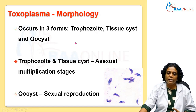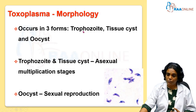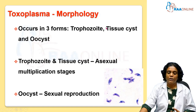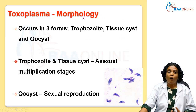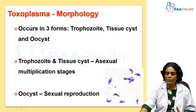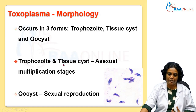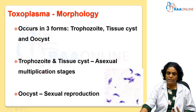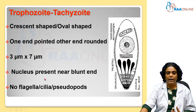In humans, you will be able to demonstrate the trophozoites or tachyzoites and the tissue cyst, but you will not be able to demonstrate the oocyst. However, all three forms are infective in nature. The asexual multiplication stages include the trophozoite or tachyzoite and the tissue cyst, whereas the sexual forms are the oocyst, which is usually present in the feline host.